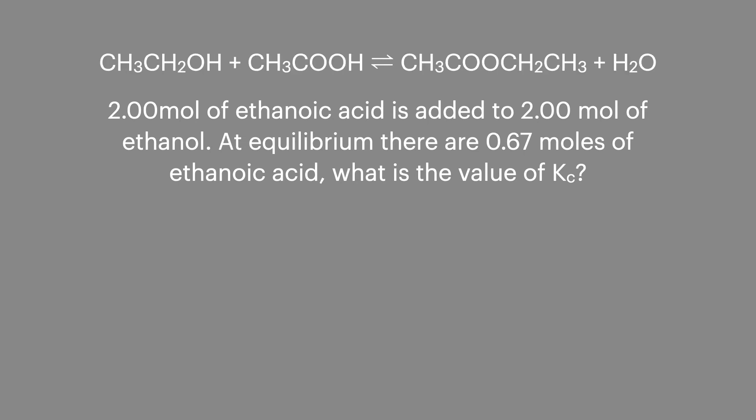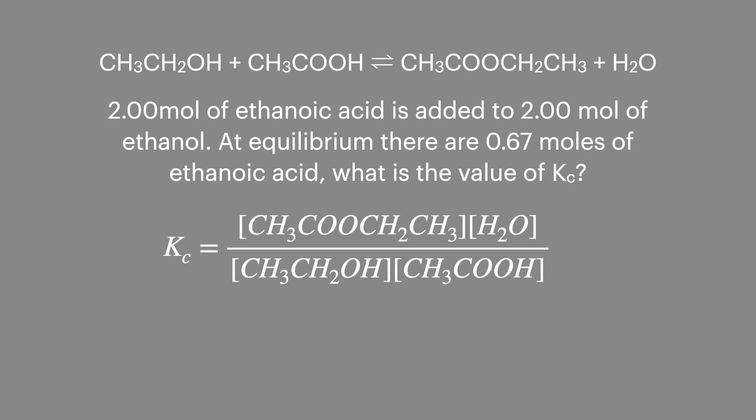In the second step what we'll do is look at a Kc expression for that equilibrium and we can see that there's the same number of items on the top line as there is in the bottom. To make the rest of this calculation a bit simpler to follow I'm going to use the letters A, B, C and D for each of the reactants and products above.